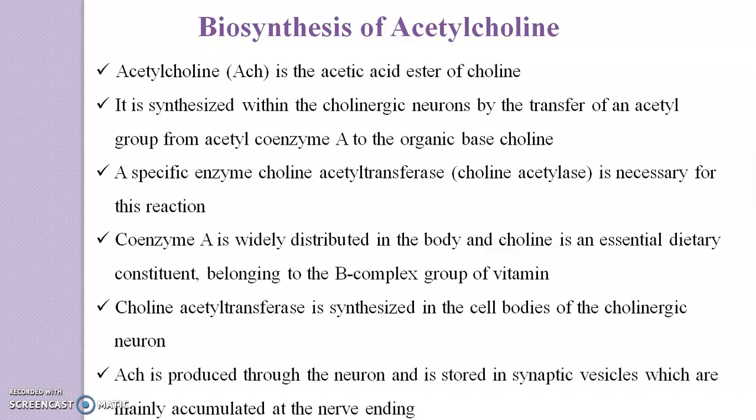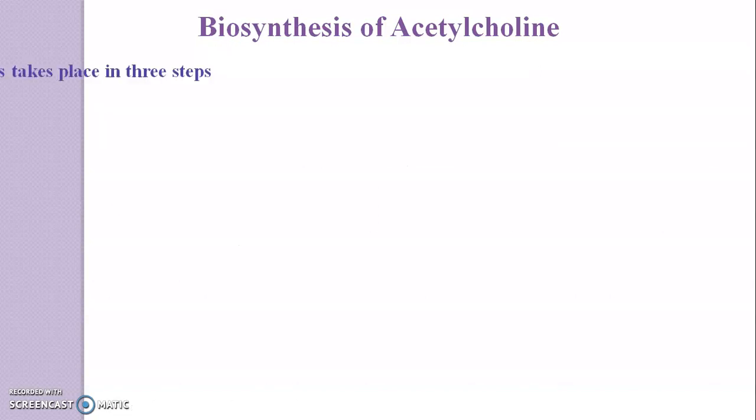Choline acetyltransferase is synthesized in the cell bodies of the cholinergic neuron. Acetylcholine is produced throughout the neuron and is stored in synaptic vesicles, which are mainly accumulated at the nerve ending. These are the introductory points regarding the biosynthesis of acetylcholine. In the next slide we discuss how this synthesis actually takes place.